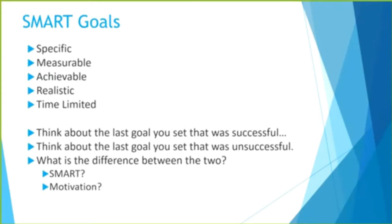SMART goals are Specific, Measurable, Achievable, Realistic, and Time-limited. Think about the last goal you set that was successful versus the last one that was unsuccessful, and the difference between the two. A lot of times we set goals that are not specific enough — like 'I want to start my own business' or 'I want to be happy' or 'I want to lose weight.' The question is: how will we know when you have achieved that goal? We need to be more specific about what it's going to look like.